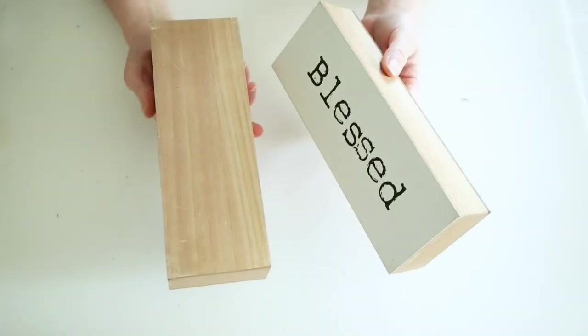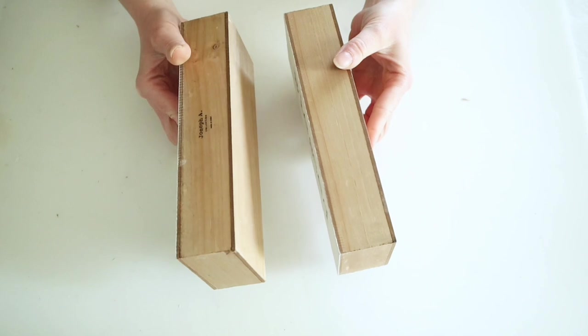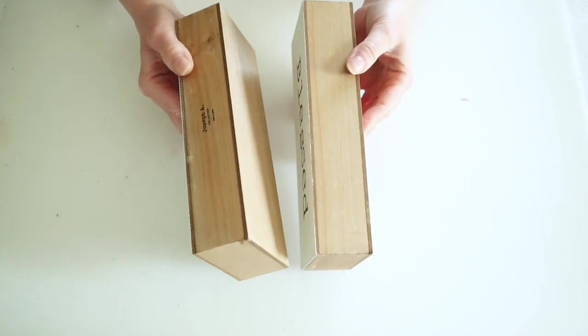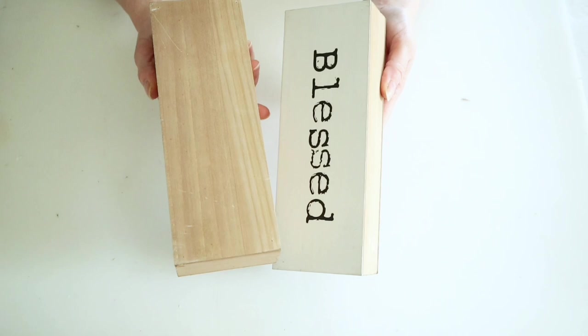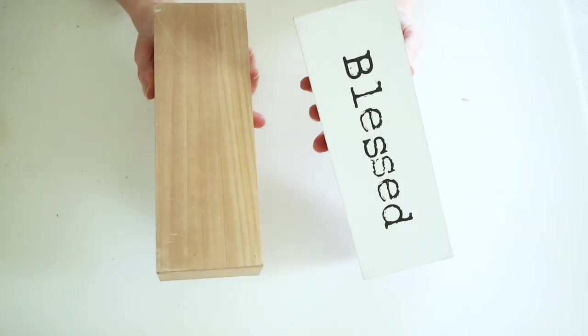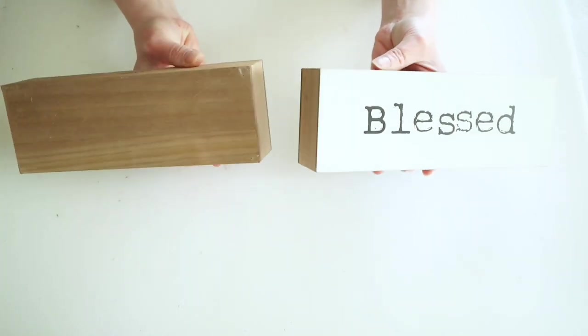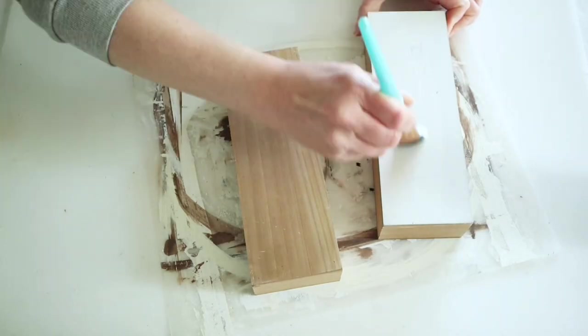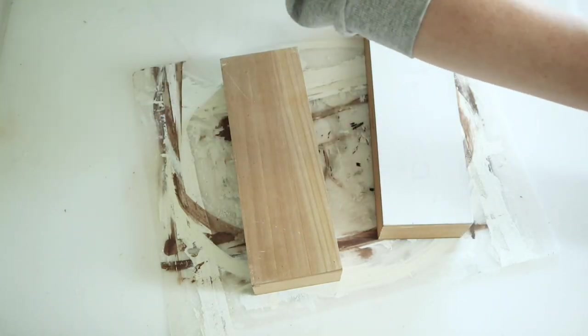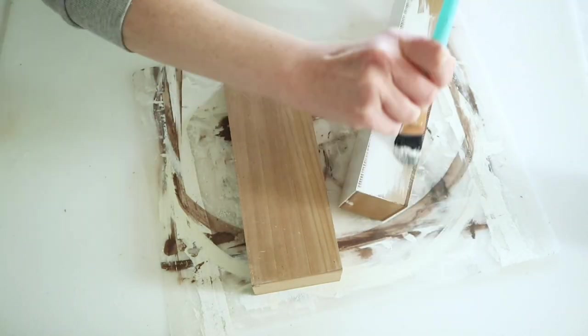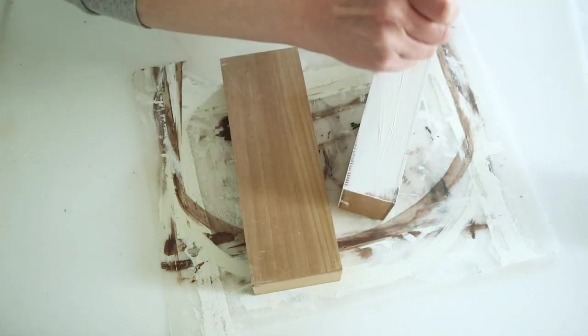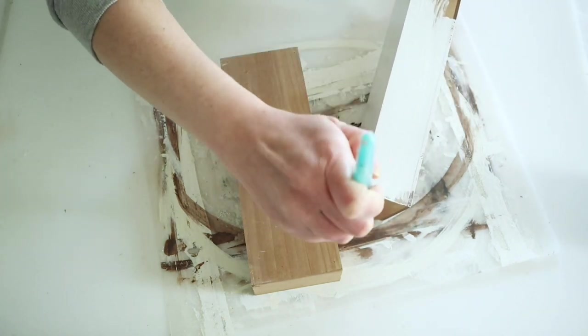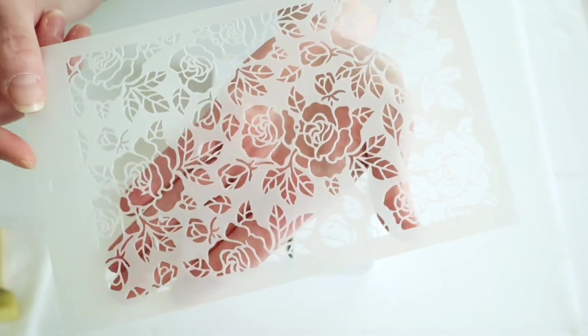For this project, I wanted to make some wall hanging vases. I grabbed these two little wood blocks from Dollar Tree—they look like two-by-fours and they're pretty sturdy. I'm starting out by painting these with two coats of my white chalk paint.